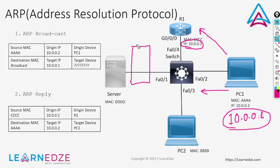PC1 will send an ARP broadcast request asking 'Who is 10.0.0.1 and what is the MAC address associated with it?' When this request reaches the switch, it will forward this broadcast message to all the ports.